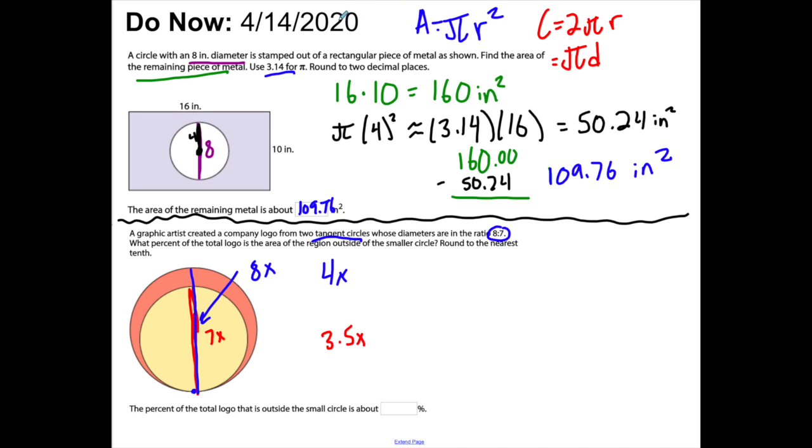If I want to get the area, if the diameter is 8x, the radius is 4x because the radius is half the diameter. If I got 7x, then that radius is 3.5x. I need to know the percent of the total logo, and the total logo is the big circle.